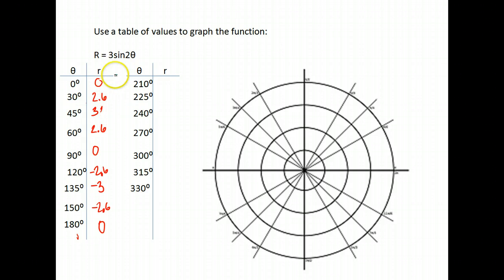If I go to 210, 210 times 2 is 420. The sine of 420 is 0.87 times 3 is 2.6. So again, my values are repeating here.